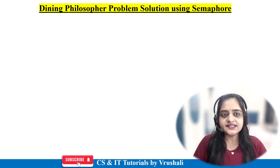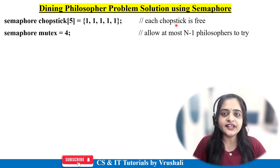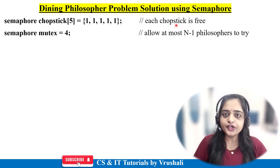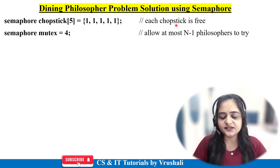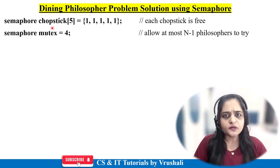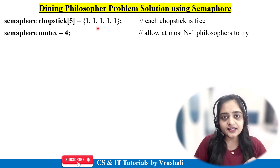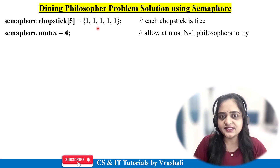Here is the dining philosopher problem solution using semaphore. Semaphore is one kind of variable and synchronization tool in operating system — it controls accessing and sharing of resources by processes. Here, semaphore chopstick[5] is defined. Chopstick means spoon. There are a total of five spoons on the dining table. The value 1 indicates a particular spoon is free, and 0 indicates the spoon is busy.